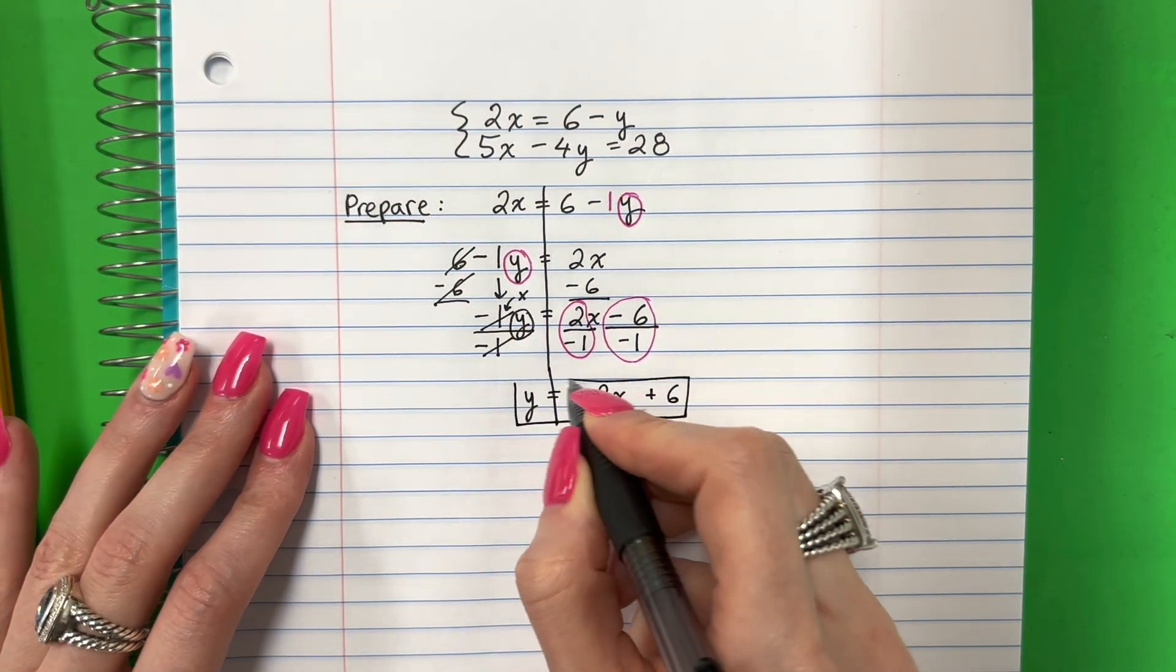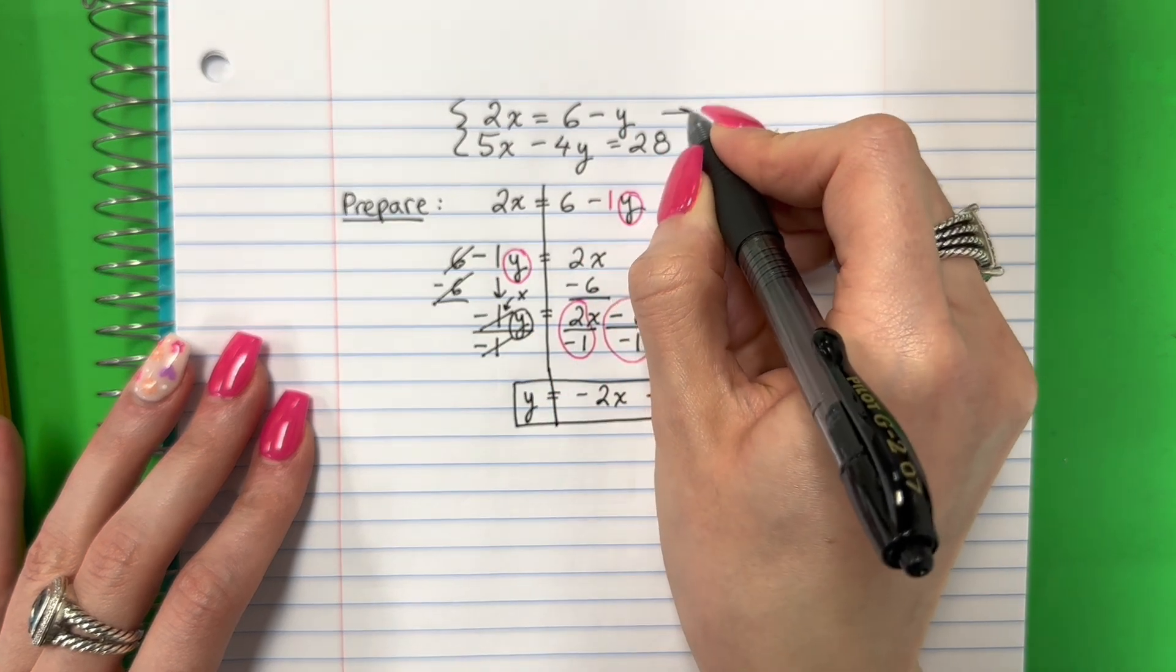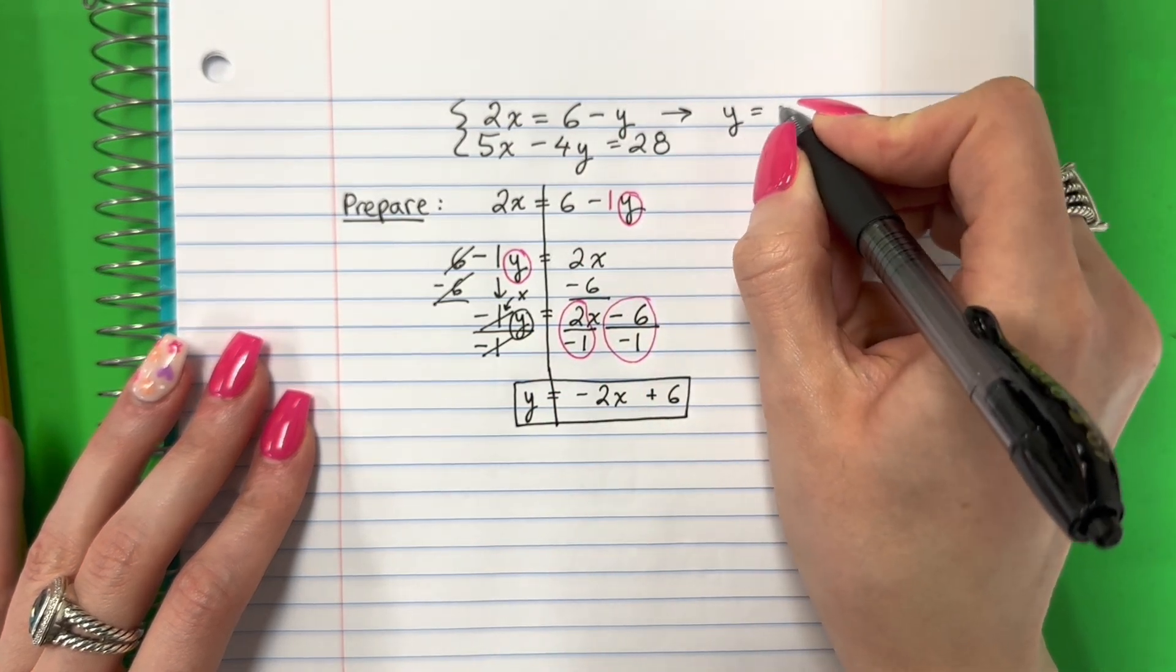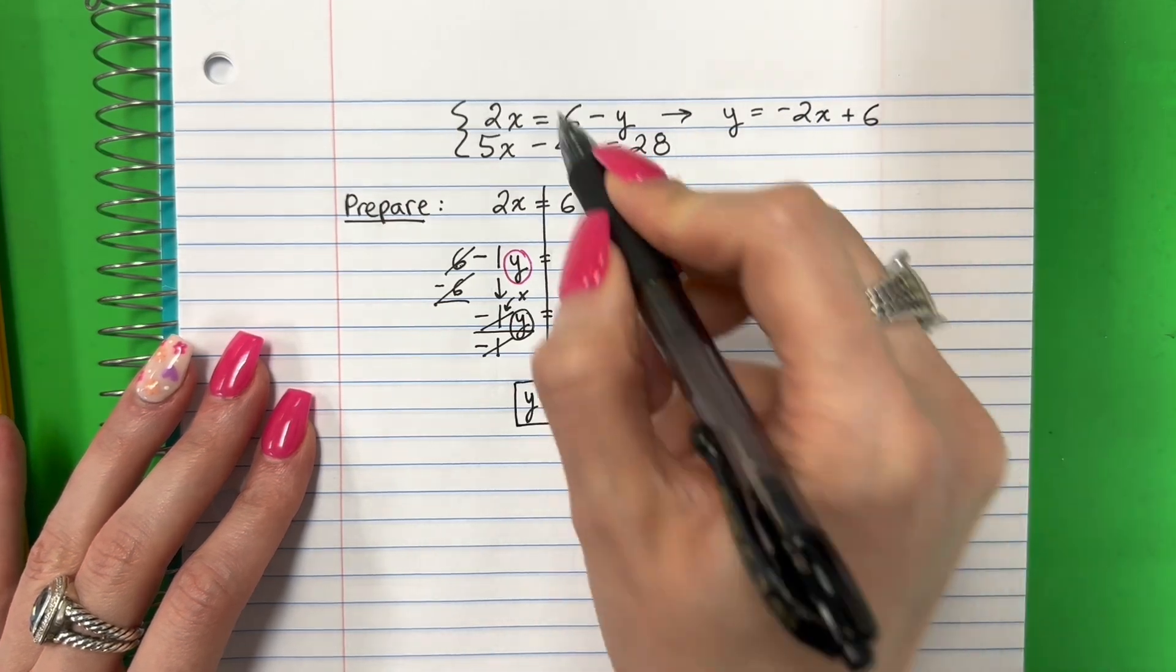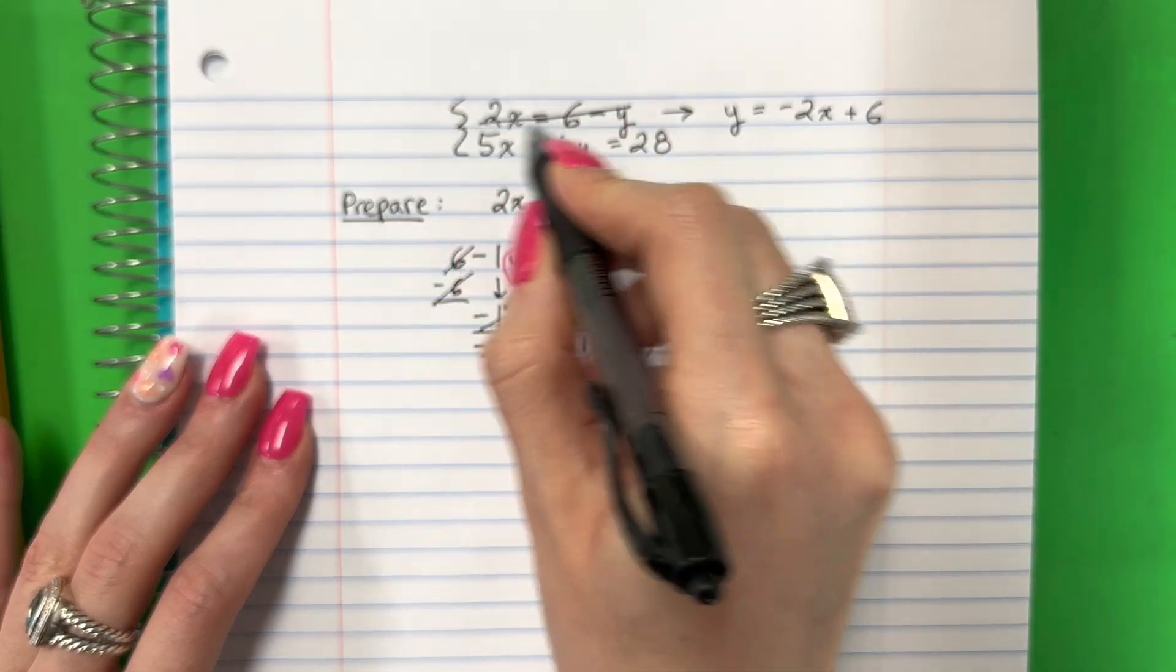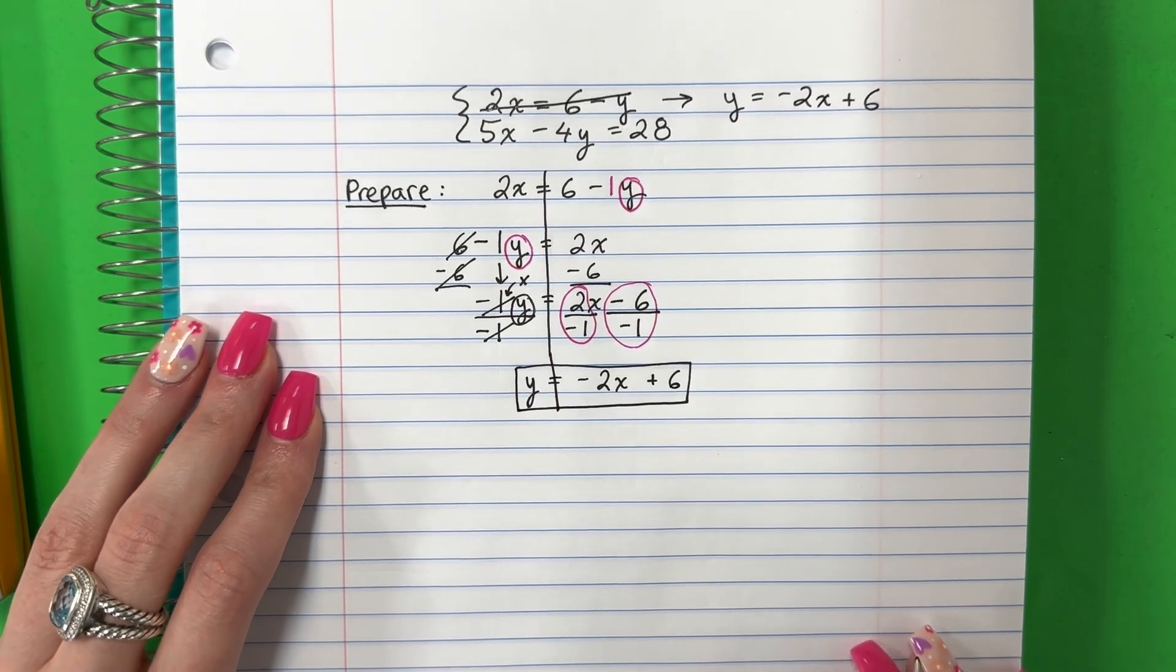So we're going to put 2 divided by negative 1. That is negative 2X. And now negative 6 divided by negative 1. Negativo 6 entre negativo 1. Positive. Positivo. Positive 6. There we go. So, that works. So, here, this is the new one. New and improved. So, este es el nuevo. No more this one. No más esta.